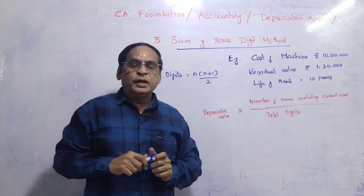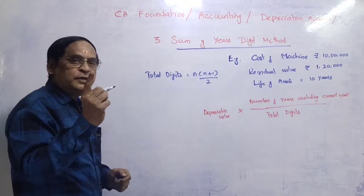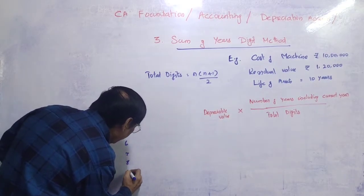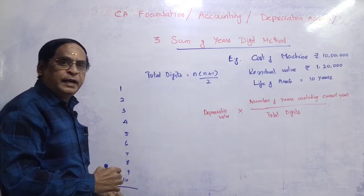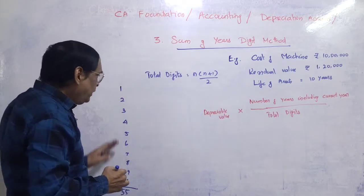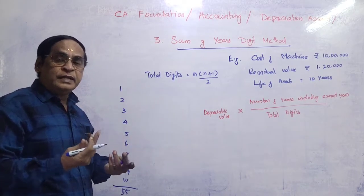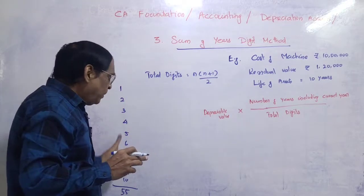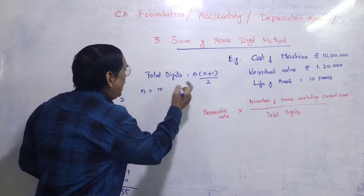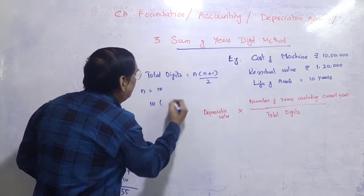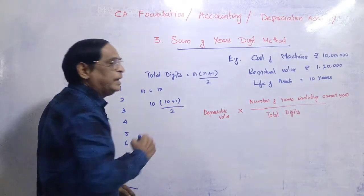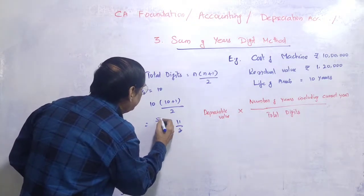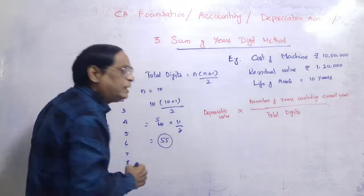Now we calculate the sum of digits for 10 years: 1 + 2 + 3 + 4 + 5 + 6 + 7 + 8 + 9 + 10 = 55. The formula for total digit is n(n+1)/2. If n equals 10, then 10 × 11 divided by 2 equals 55. So the total digit is 55.